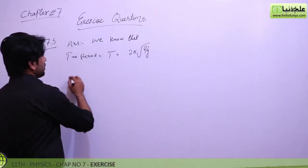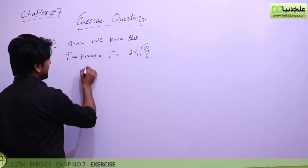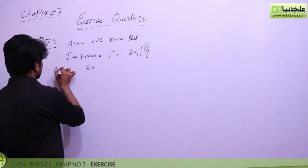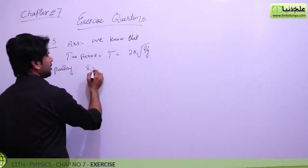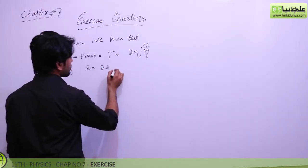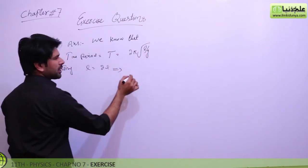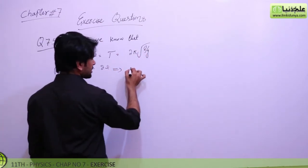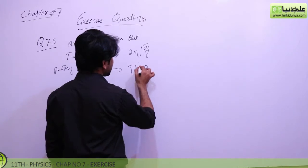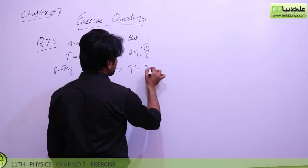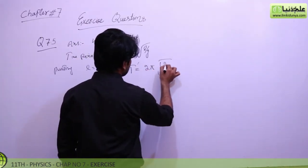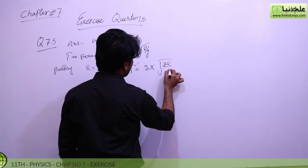Here, according to the first condition, we are putting l equal to 2l. So, in this formula when we put 2l in place of l, the new time period T' will become 2π√(2l/g).